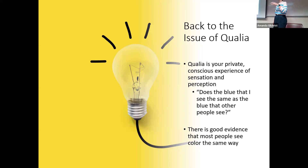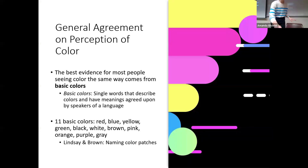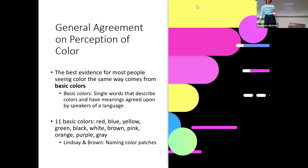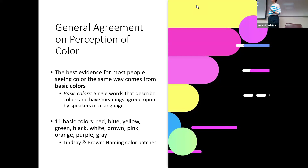This similarity in color processing holds true across cultures and across languages. There is general agreement on the perception of color, and some of the best evidence comes from the terminology we use for basic colors — single words that describe colors with meanings agreed upon by speakers of a language. Based on research, we tend to consider 11 different basic colors.